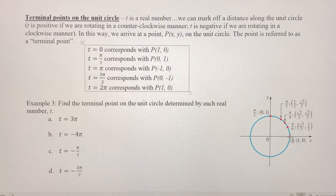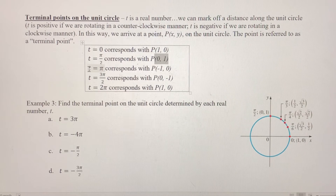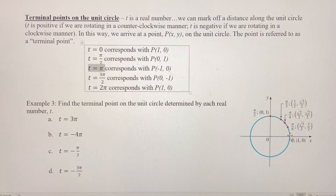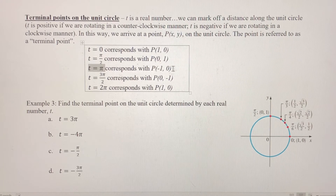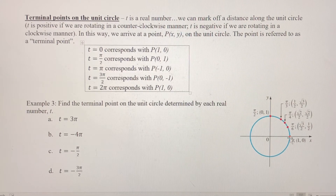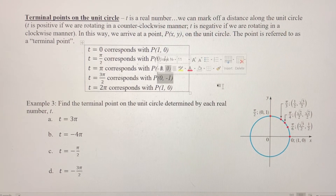If our T value is π/2, we're traveling along the unit circle from the start to π/2 radians, and the terminal point is the ordered pair (0, 1). If we've got T equals π, that means we're going halfway around the circle, and the ordered pair at that location is (-1, 0). So that's the terminal point for T equals π. 3π/2 is three quarters of the way around the circle, so the terminal point corresponding to 3π/2 is (0, -1).